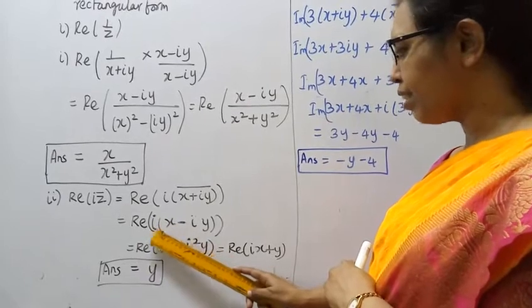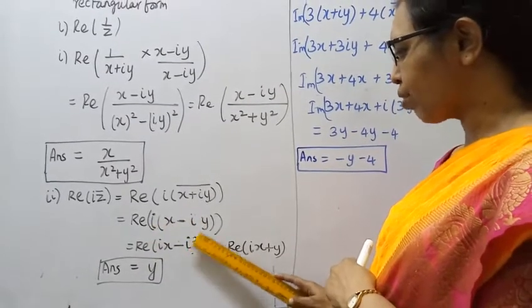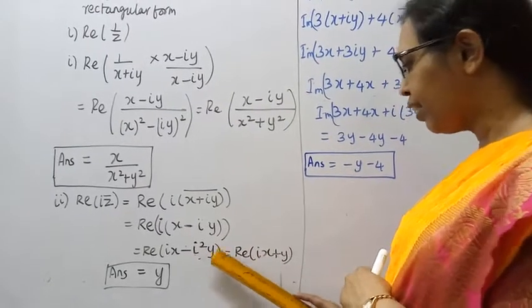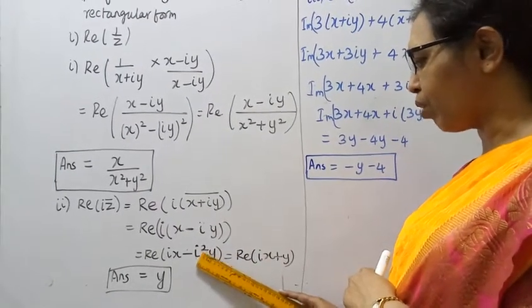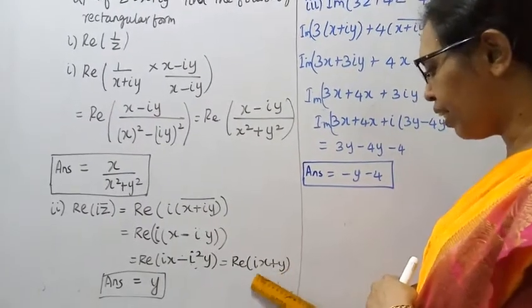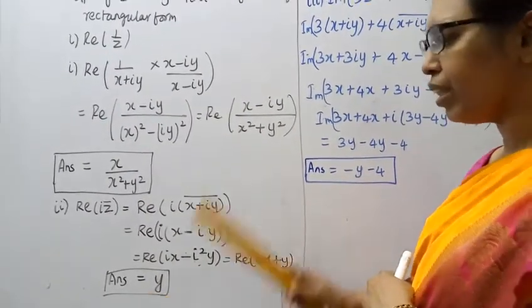Real part of ix minus i squared y. Since i squared equals minus 1, minus times minus is plus y plus ix. The real part is y, so the answer is y.